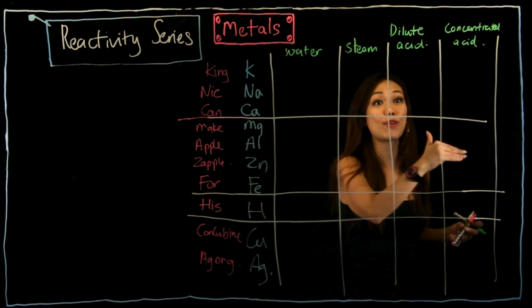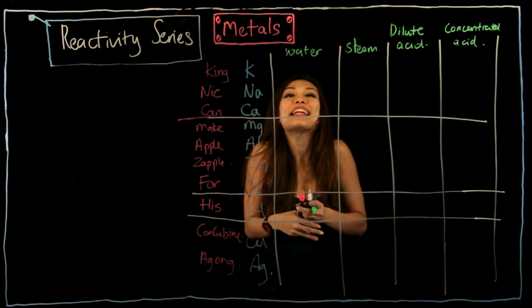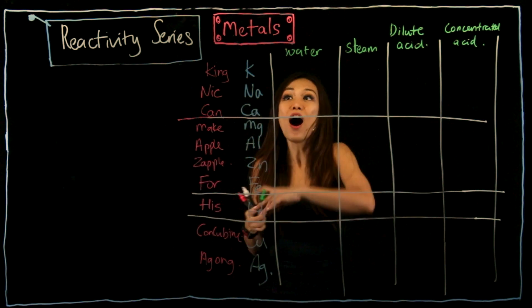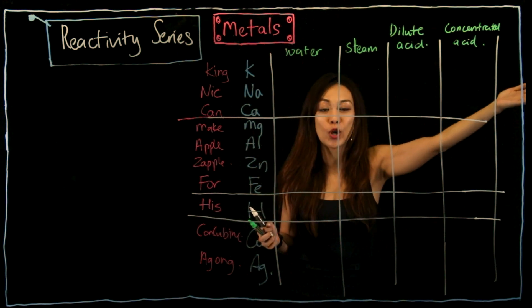After dilute acid, we have concentrated acid. So this is the whole table that will show you the entire reaction of metals ranging from water all the way to concentrated acid.